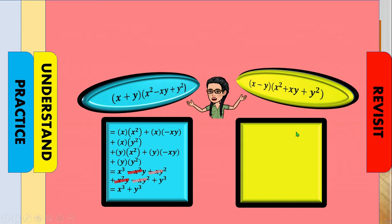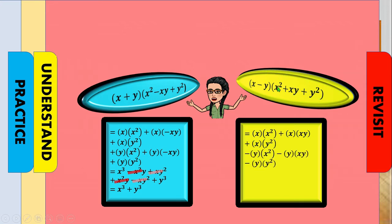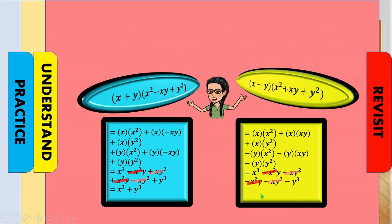Now on the right, we have x minus y and x squared plus xy plus y squared. We distribute x to x squared, to xy, to y squared, and then negative y to x squared, to xy, and to y squared. We get x cubed plus x squared y plus xy squared minus x squared y minus xy squared minus y cubed.